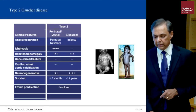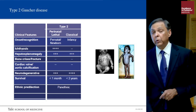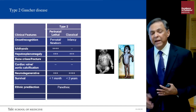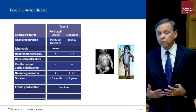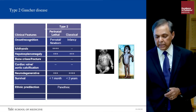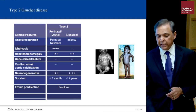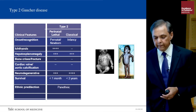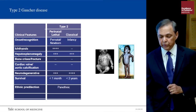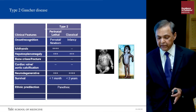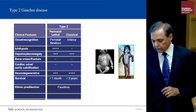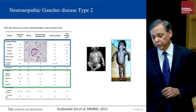Type 2 Gaucher disease can present at birth with a collodion skin baby phenotype, or shortly after birth with massive hepatosplenomegaly that rapidly evolves into brainstem signs and neurodegenerative disease. It can present with ichthyosis at birth. Hepatosplenomegaly is common in all forms, bone manifestations are not an important feature, there are no cardiac manifestations, but neurodegenerative disease is very common. It is panethnic and lethal within the first one or two years of life.